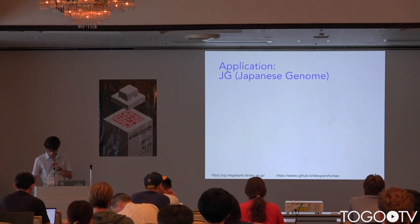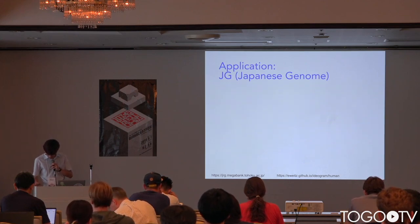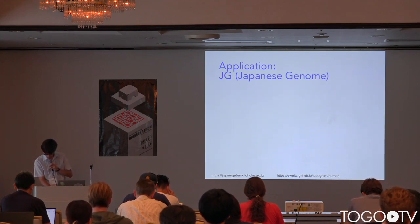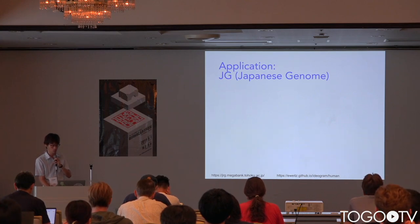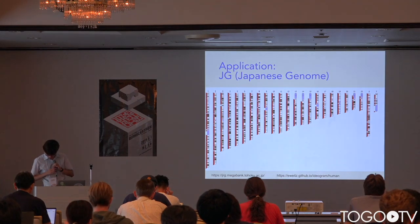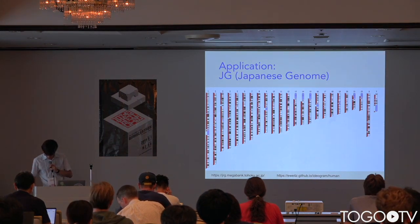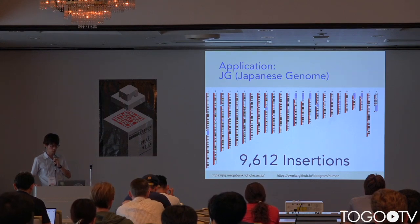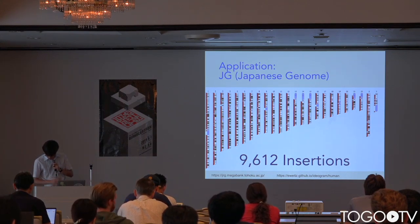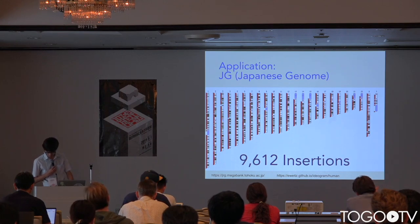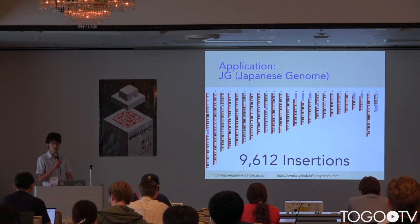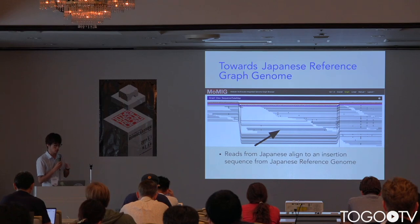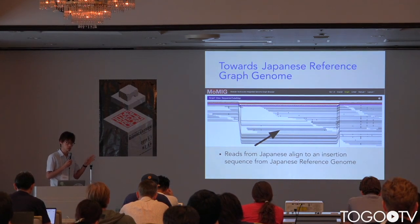Let's move on to the application of graph genomes. Japanese genomes have been sequenced deeper and deeper. For example, the Tohoku Medical Megabank reported that more than 9,000 insertion sequences were discovered from sequencing data from Japanese samples. My collaborators and I believe that Japanese genomes should also be represented using graph genomes. This is a preliminary result.